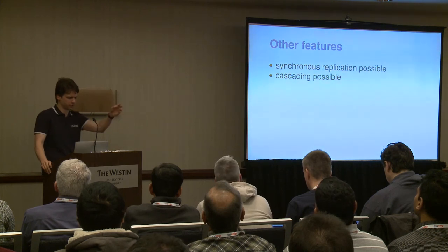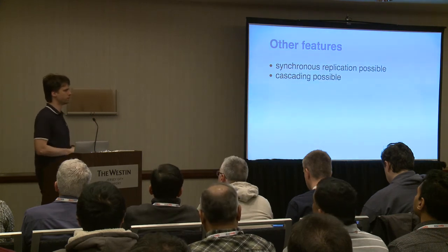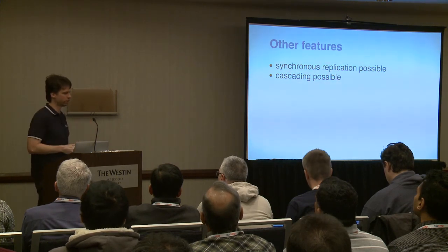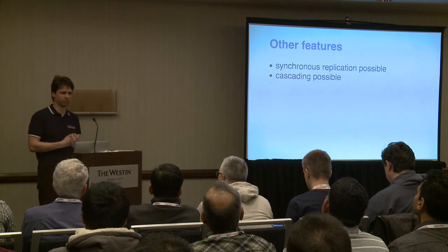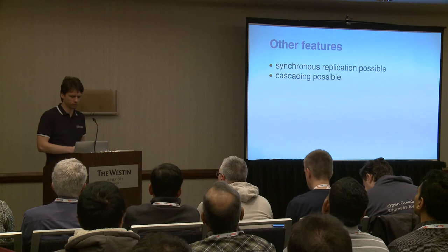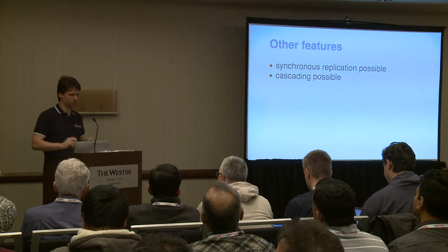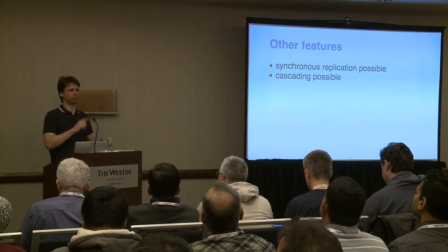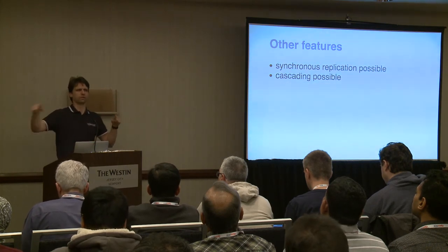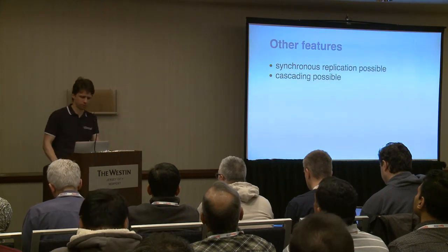Cascading is possible in the sense that you can hook these one-to-one connections together, going in any direction or even in a circle as long as you filter things. But it's not like Slony where there's global awareness of all nodes. If you have nodes one, two, and three in a cascading setup, node one doesn't know about node three. It's just one-to-one. That could be improved in the future.